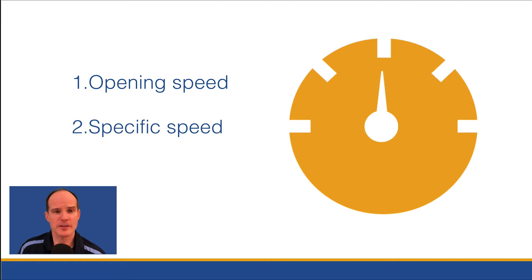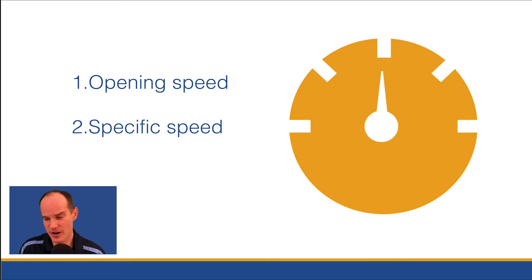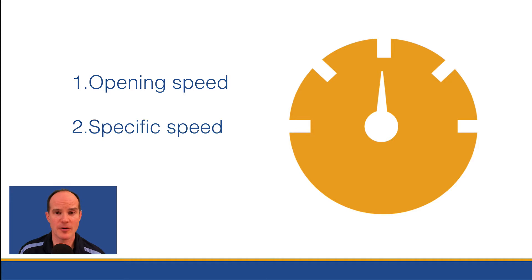The second thing you can measure is specific speed surrounding a specific routine that a user might be doing, such as running a report or perhaps sending a bunch of emails out. That whole routine is an automated process that takes a certain amount of time. A lot of times these routines will run very quickly in the office, but once they host, these routines slow down to a crawl depending on how they're designed. So that's specific speed.